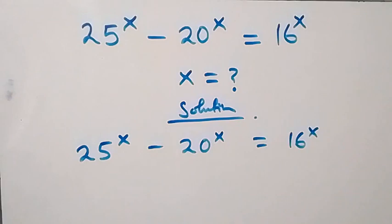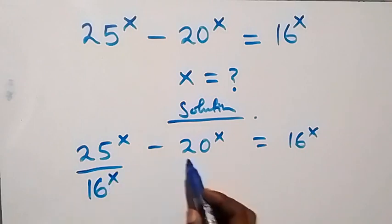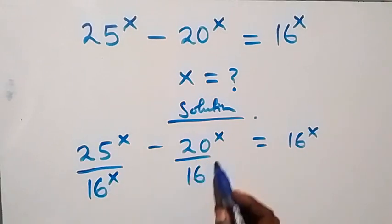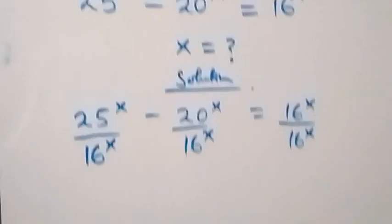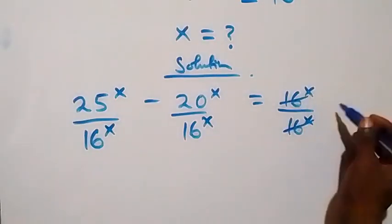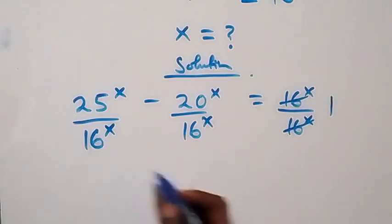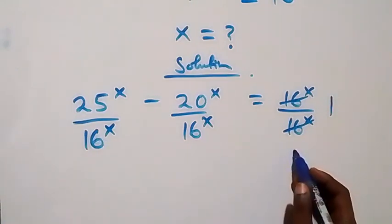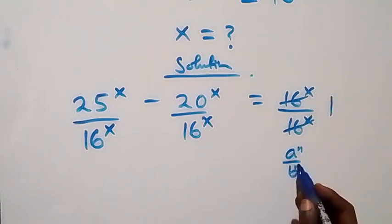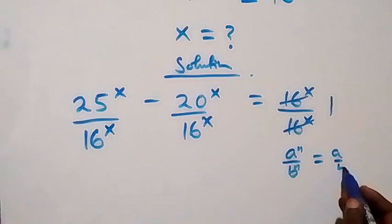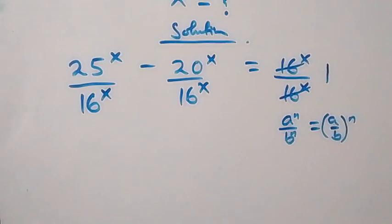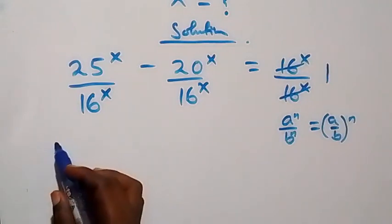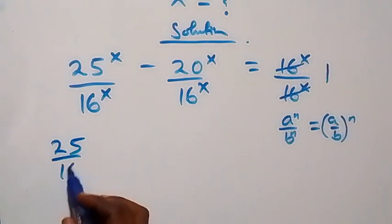From here, let's divide through by 16 raised to power x. So we divide each term by 16 raised to power x. On the right side, this cancels to give 1. Now, following the rule that a raised to power n over b raised to power n is the same as (a over b) raised to power n, we can rewrite the left side.